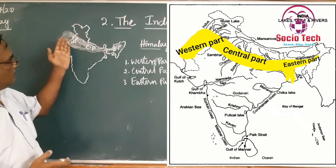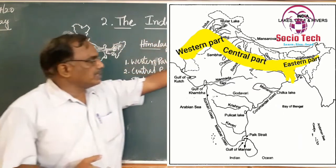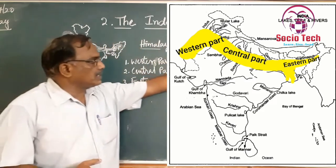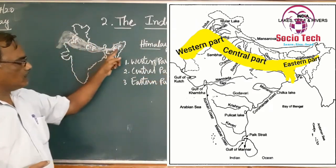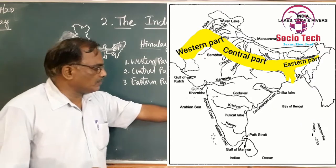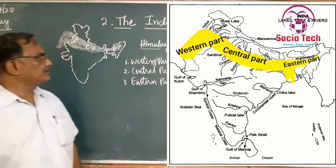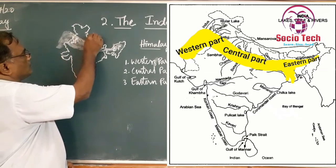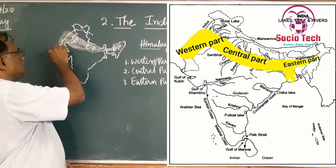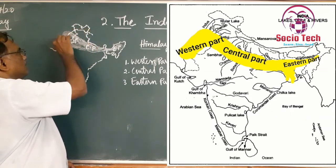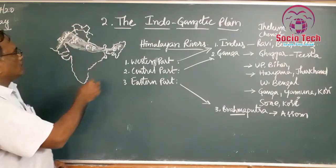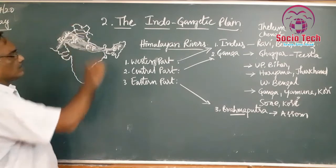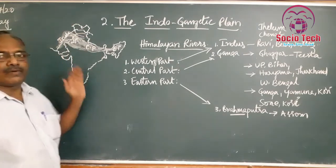The western part is formed by the Indus river, the central part is formed by the Ganga river, and the eastern part in Assam is formed by the Brahmaputra river. The western part is formed by the Indus river and its tributaries.